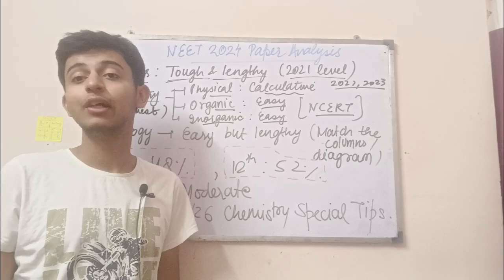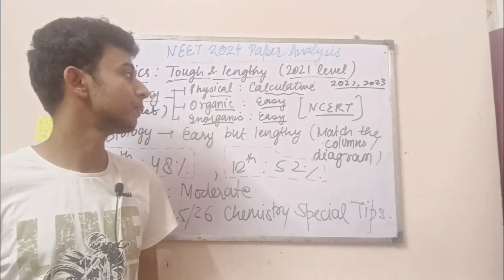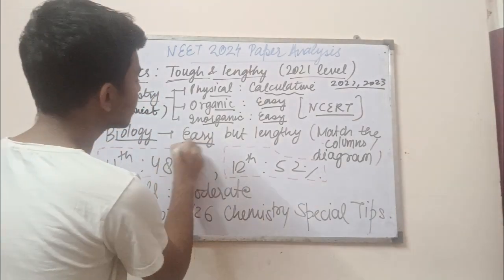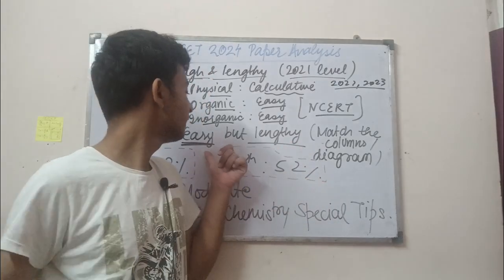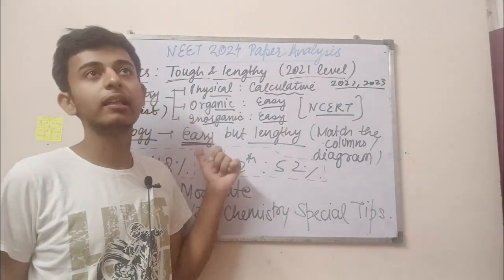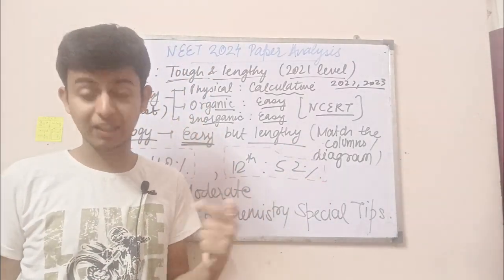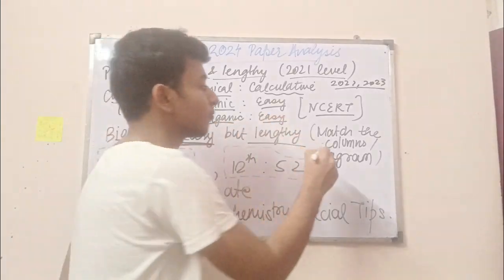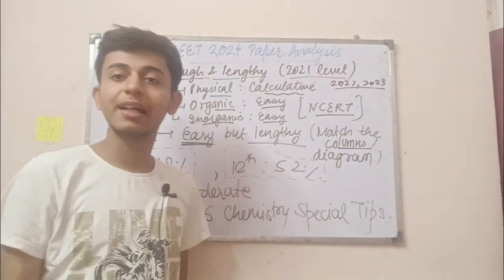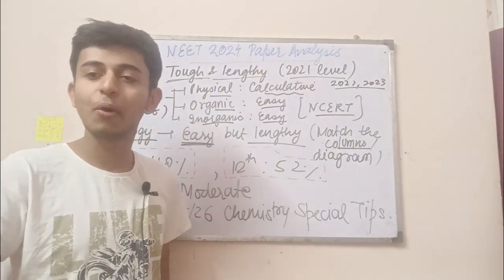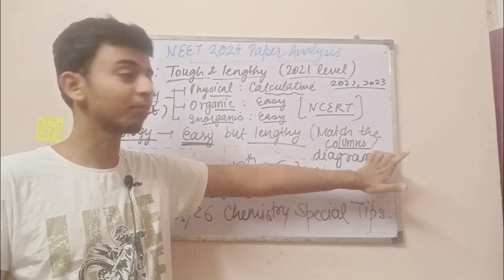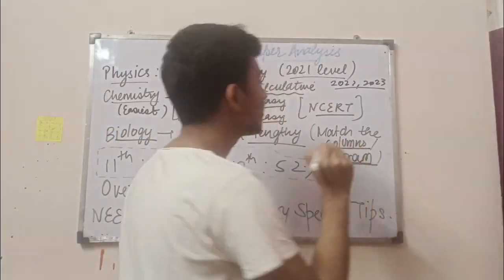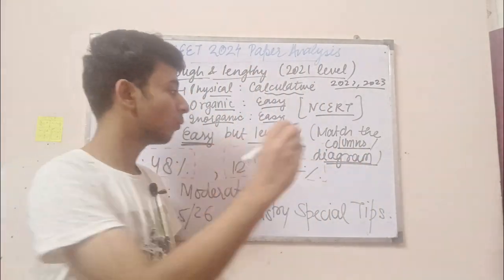Biology was easy but lengthy. Unlike last year, where more direct questions were there in bio, this time we had a lot of match-the-column questions, which take a little more time than direct questions. For the very first time, a lot of diagram-based questions were also introduced.